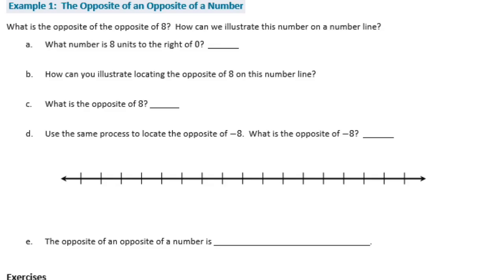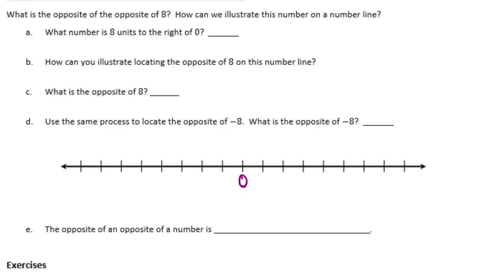Example 1: What is the opposite of the opposite of 8? How can we illustrate this on a number line? It's going to take us step by step. What number is 8 units to the right of 0? If we move 8 units to the right on the number line, we get to positive 8.